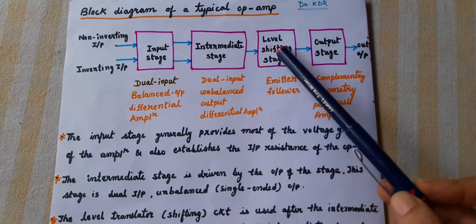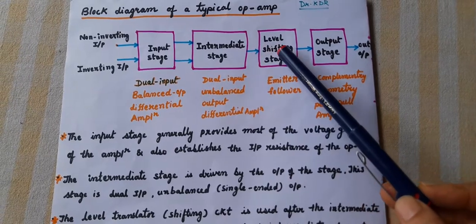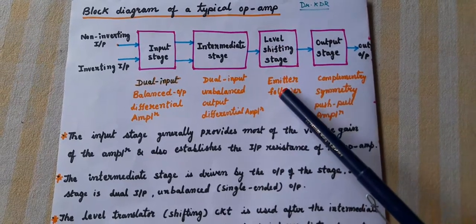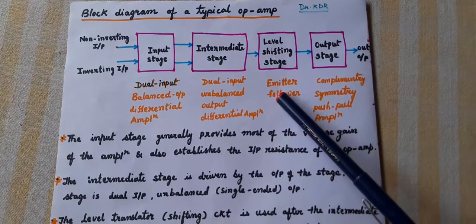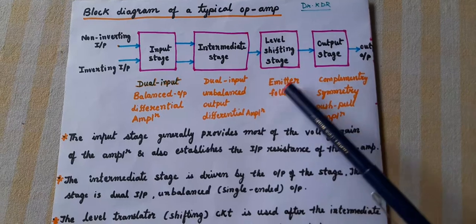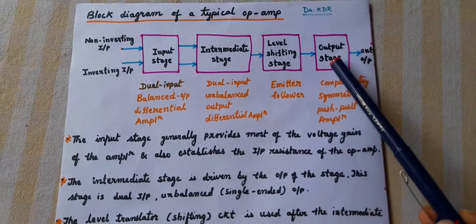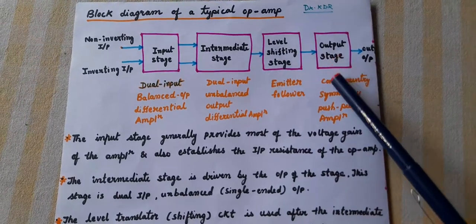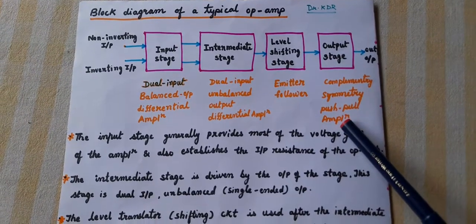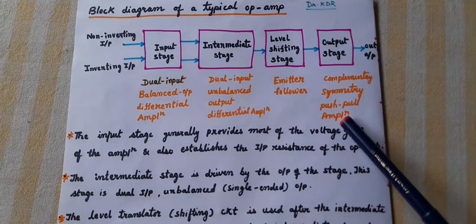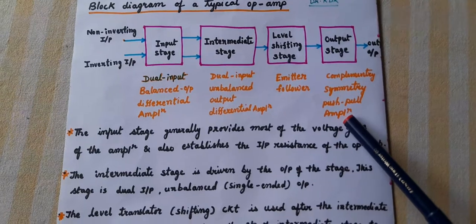The level shifting stage is comprising of an emitter follower. The output stage is comprising of a complementary symmetry push-pull amplifier.